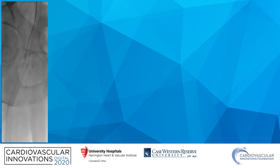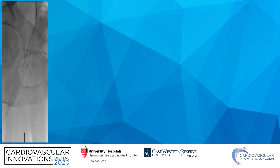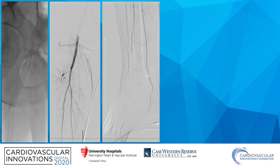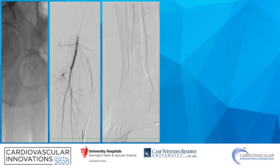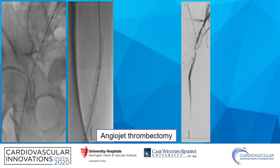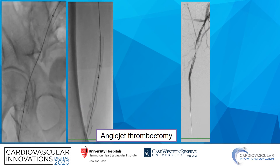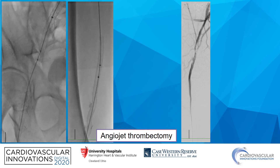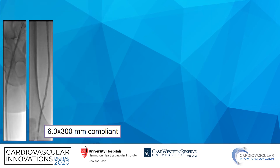We placed the intervention sheath and crossed the occlusion using a stiff-angle glide wire and Navicross. We confirmed true lumen access distally with selective injection into the popliteal artery. Here you can actually appreciate that the PT, which was previously hibernating, has now actually increased in flow. We performed AngioJet thrombectomy using the Solent Omni catheter. Even after the thrombectomy, there was still a significant amount of thrombus within the common femoral artery. We then performed balloon angioplasty of the entire common femoral, SFA, and popliteal artery.